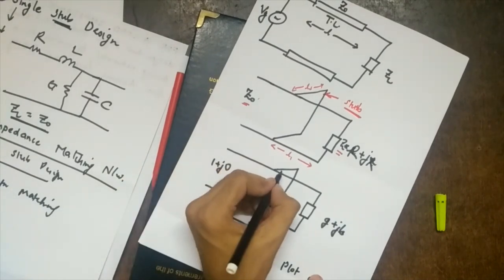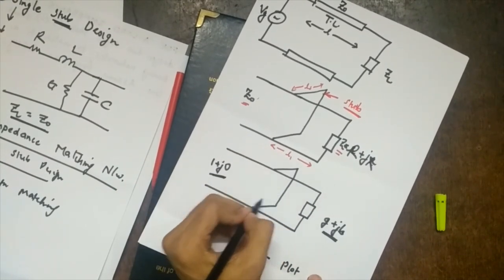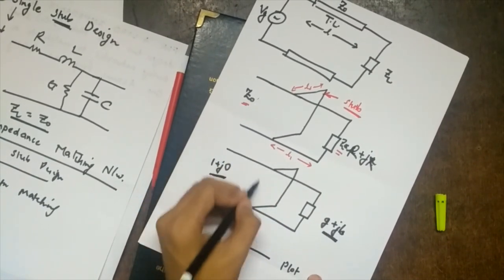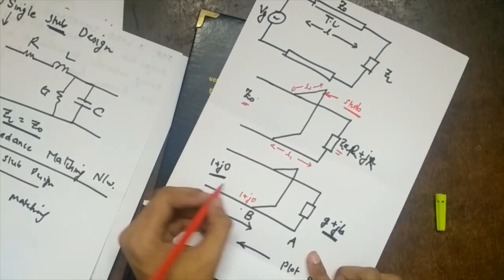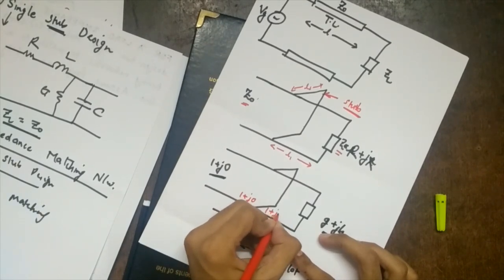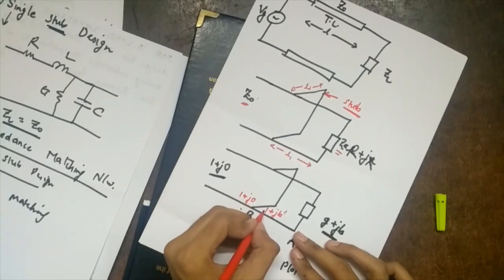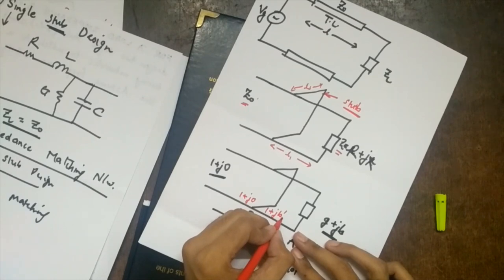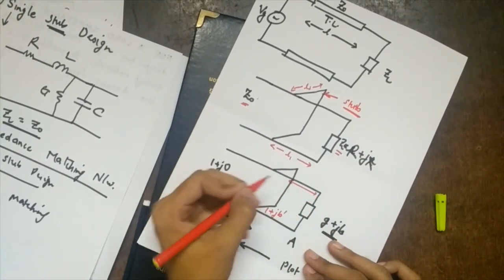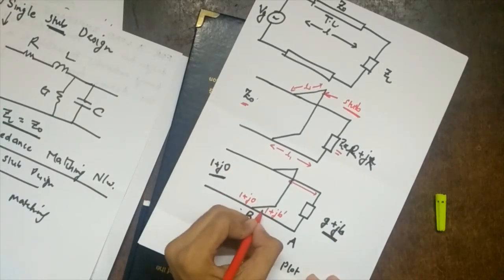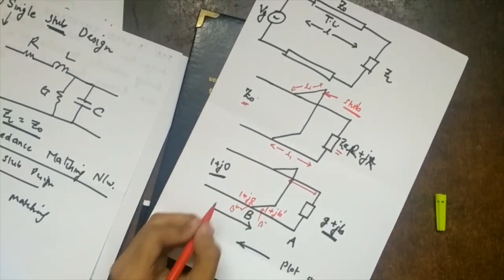We want to make 1 plus j0 equal to g plus jb. The stub, connected in parallel, changes only the reactive part. So at point B (left of the stub) we have 1 plus j0, and after the stub changes the reactive part, we get 1 plus jb-prime. Moving along the transmission line towards the load changes both resistance and reactance, so 1 changes to g and b-prime changes to b. This is how 1 plus jb-prime becomes g plus jb.